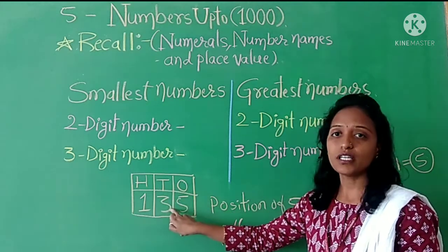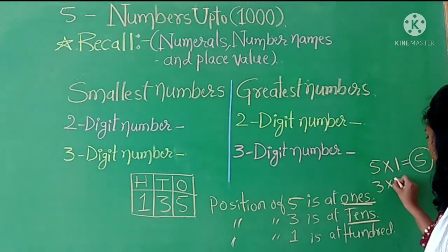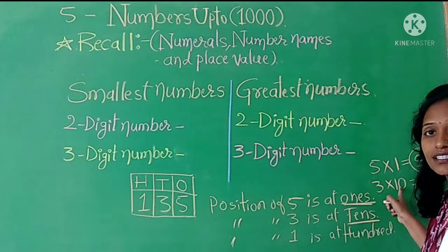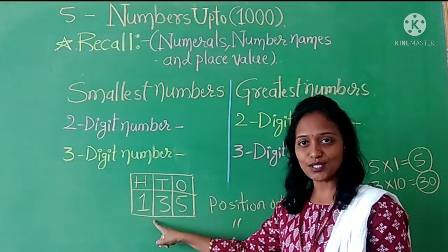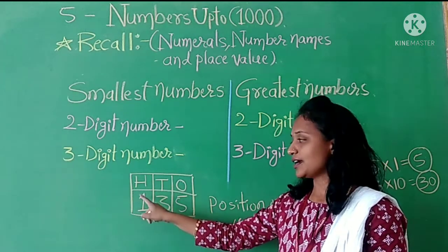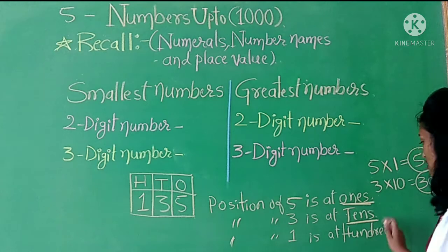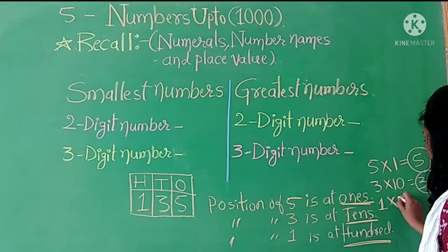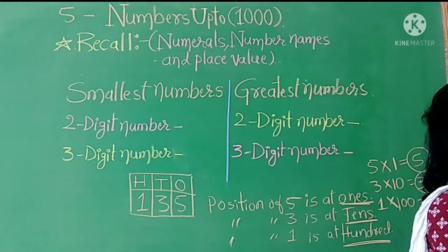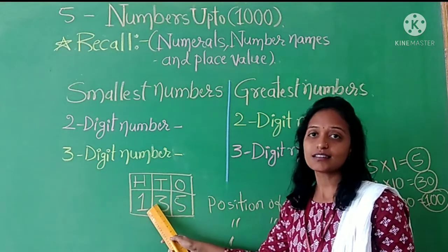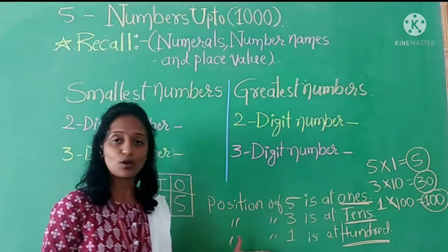Next, the place value of three: three is at tens' place, so three multiplied by ten. Three tens are thirty. So the place value of three is thirty. Now the place value of one: one is at hundreds' place, so one into hundred equals one hundred. The place value of one is one hundred. This is how we understand the concept of place value.